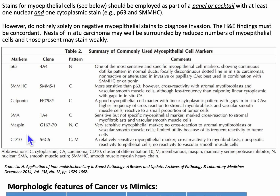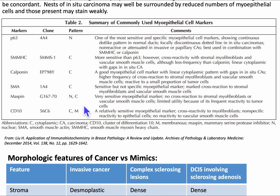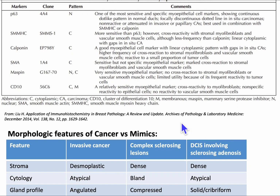Smooth muscle actin (SMA) is cytoplasmic — it's a sensitive but not specific myoepithelial marker with marked cross-reaction to stromal myofibroblasts and vascular smooth muscle cells. CD10 is cytoplasmic and membranous, a relatively sensitive myoepithelial marker, but there is cross-reactivity to myofibroblasts and nonspecific reactivity to epithelial cells, with no reactivity to vascular smooth muscle cells.